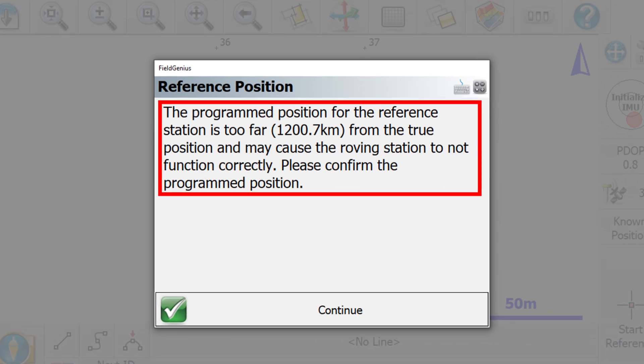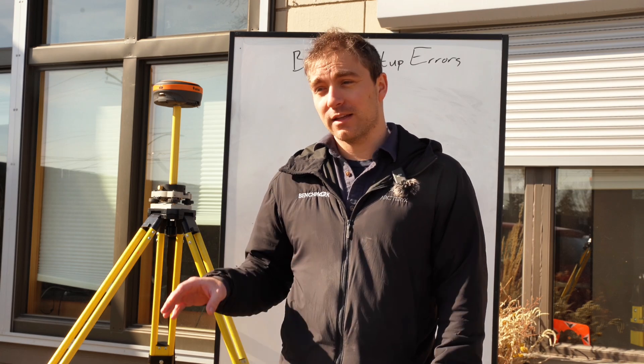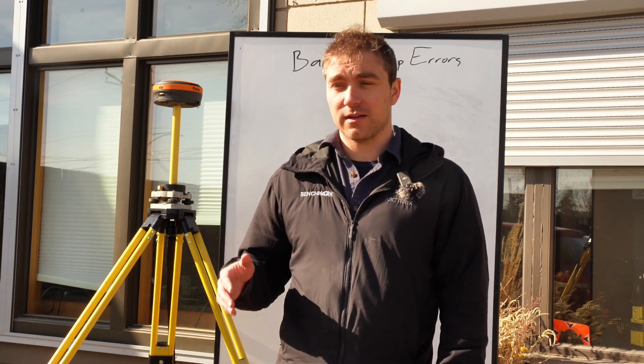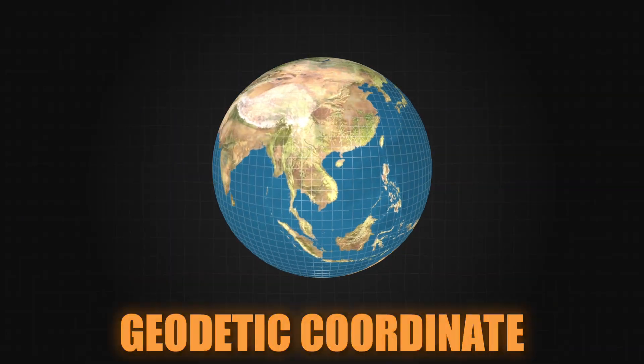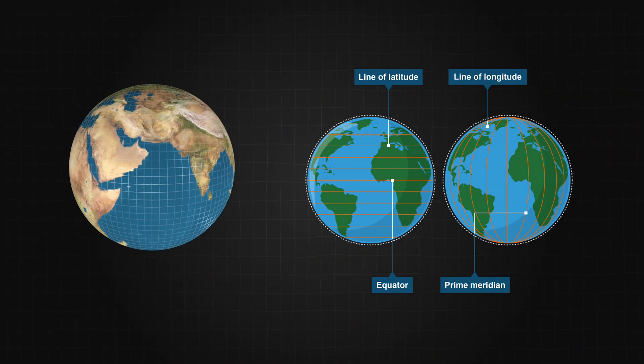This error shows up when you use the known point setup in Field Genius, and the reason it shows up is because using this setup method Field Genius is looking for what we call a geodetic coordinate. It's looking for a latitude and a longitude.